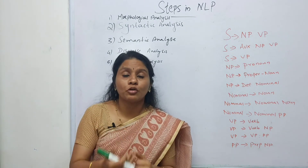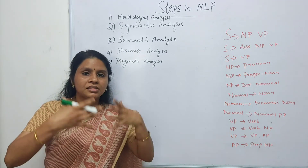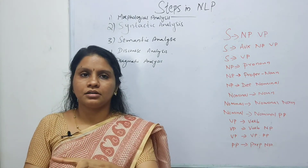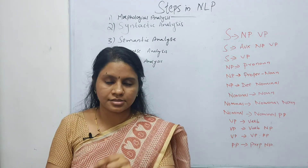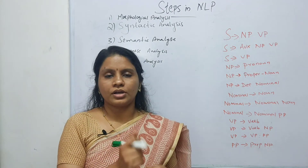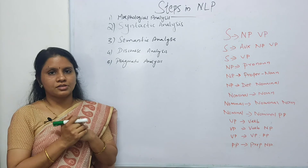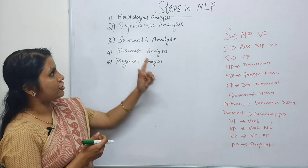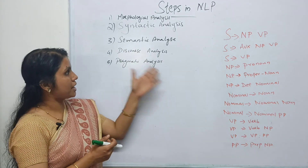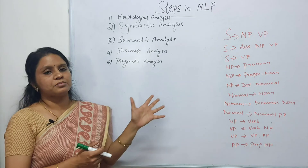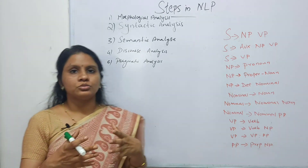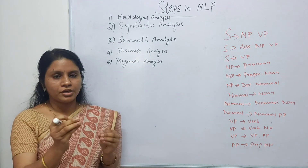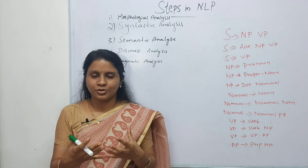The fifth step is pragmatic analysis. In this step we find the hidden information from the given text by interpreting the knowledge using information from previous steps. For example, 'turn off the lights' is interpreted as an order, while 'switch off the lights' may be interpreted as a request. These are all the five steps carried out by the NLP system: morphological analysis, syntactic analysis, semantic analysis, discourse analysis, and pragmatic analysis. Hope you are clear — if you have any doubts, put a comment and I will make a video on it.